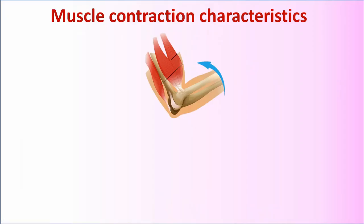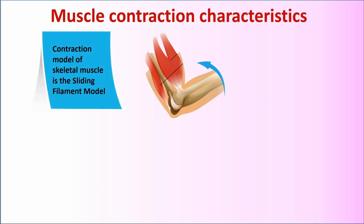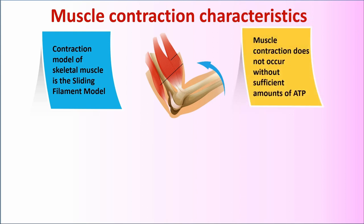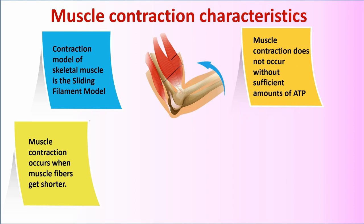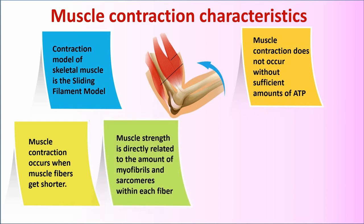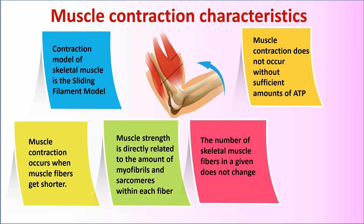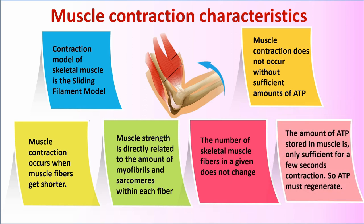Muscle contraction characteristics. The contraction model of skeletal muscle is the sliding filament model. Muscle contraction does not occur without a sufficient amount of ATP. Muscle contraction occurs when muscle fibers get shorter. Muscle strength is directly related to the amount of myofibrils and sarcomeres within each fiber. The number of skeletal muscle fibers in a given muscle does not change, and the amount of ATP stored in muscle is only sufficient for a few seconds of contraction, so ATP must regenerate.